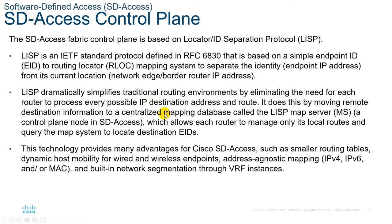LISP dramatically simplifies traditional routing environments by eliminating the need for each router to process every possible IP destination. It does this by moving remote destination information to a centralized mapping database called the LISP Map Server or MS — a control plane node in SD-Access — which allows each router to manage only its local routes and query the map system to locate destination EIDs. This provides advantages such as smaller routing tables, dynamic host mobility for wired and wireless endpoints, addressing-agnostic mapping for IPv4, IPv6, or MAC address, and built-in network segmentation through VRF instances.